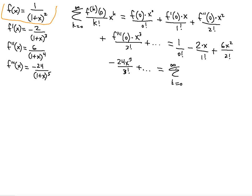I'm counting from 0 for k. Let's take care of the factorials. As you can see, the number in the factorial always increases by 1, so we can just write k factorial. The signs alternate, so we will have negative 1 to the k — not k plus 1 but k, because when k equals 0 this becomes positive, which matches the first term. Now let's take care of the coefficients.